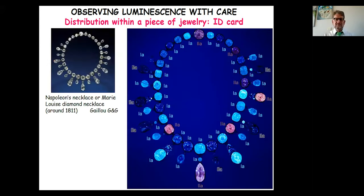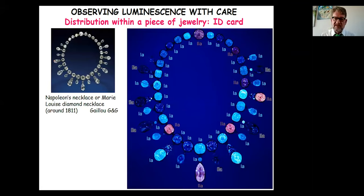Another example is the Napoleon necklace, written about by Eloise Gayou. The near-colorless diamonds in it, when viewed under luminescence, reveal that those luminescing blue are type 1A or inert, while those luminescing orange or pink are type 2A. Luminescence thus reveals the diamond type within the necklace — another way to look at identification in jewelry through luminescence, giving it a unique character.